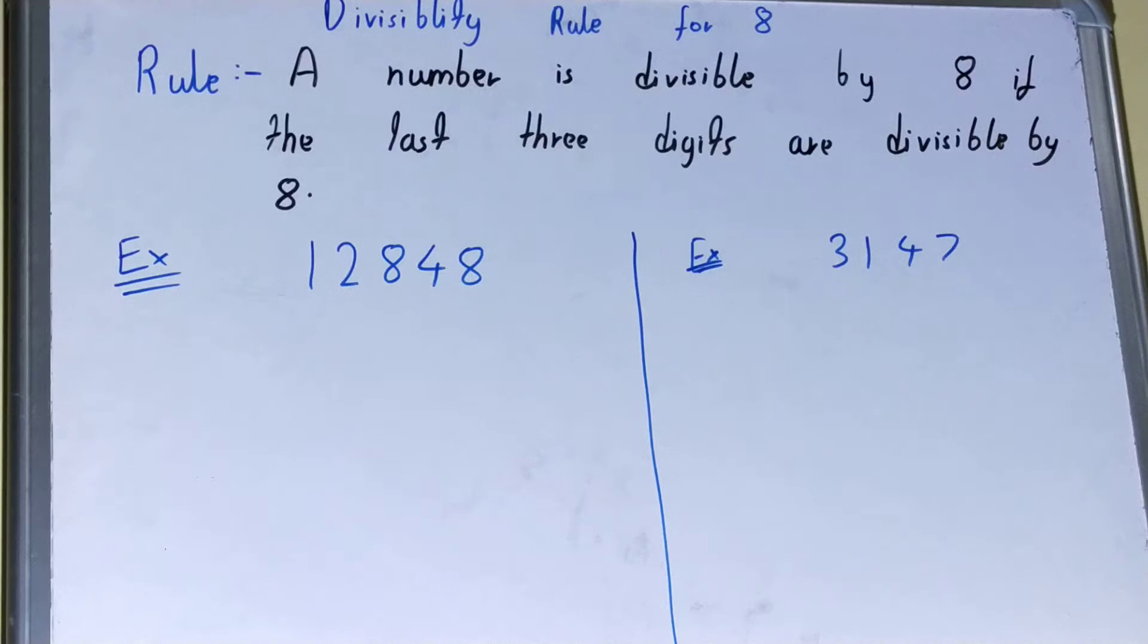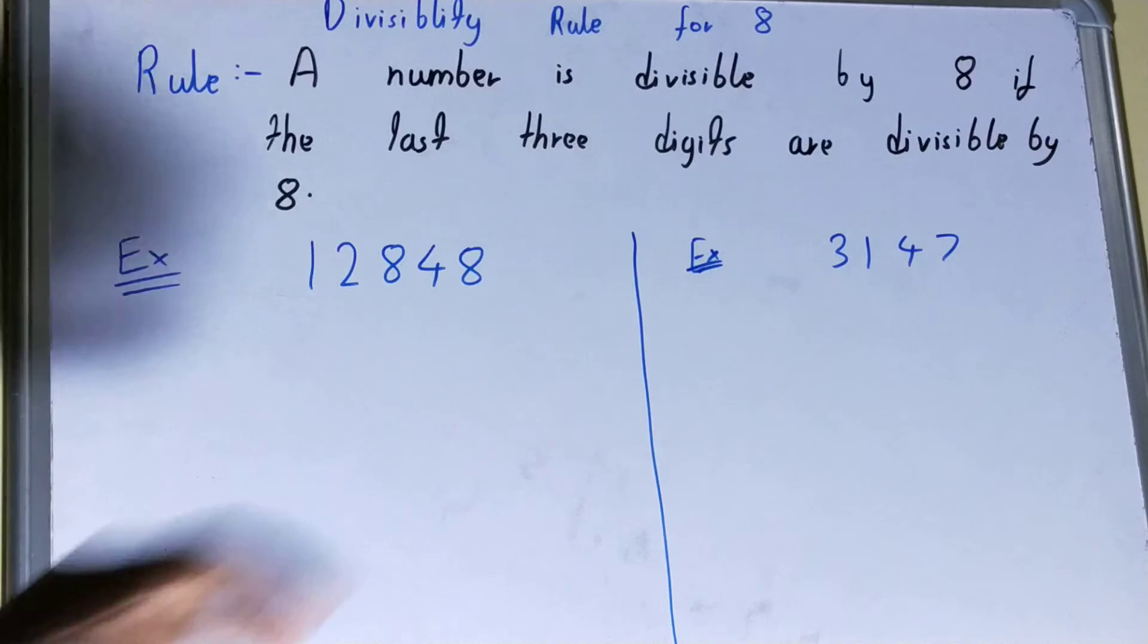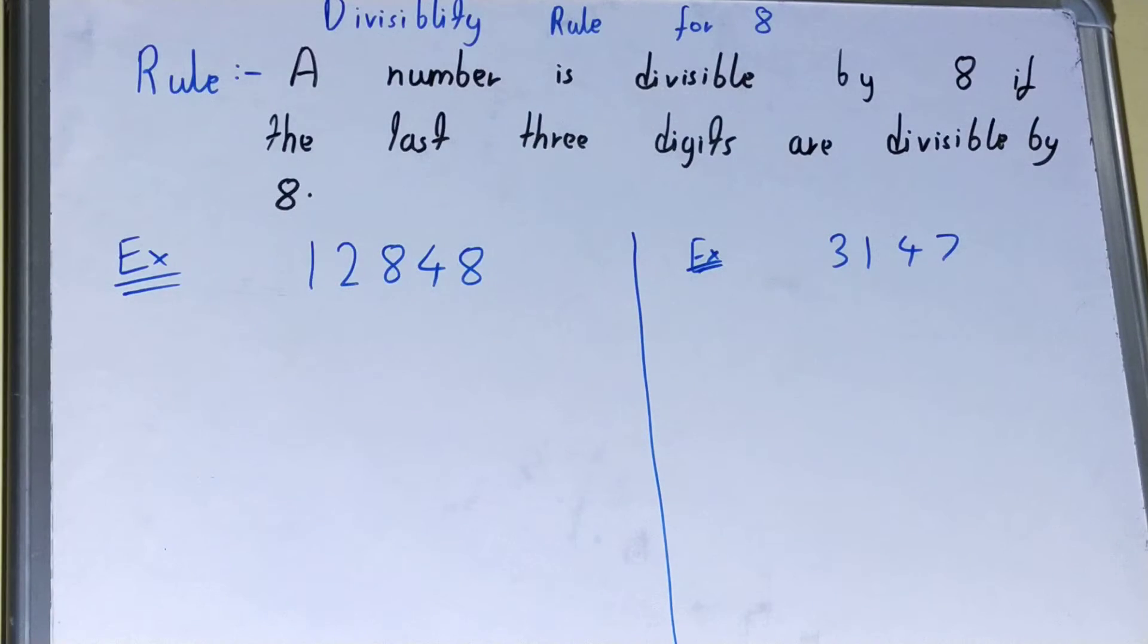First, we'll look at the rule, and then we'll come to some examples to understand how it works. If we talk about the rule, a number is divisible by 8 if the last three digits are divisible by 8. So to check a particular number, we need to take the last three digits, divide it by 8, and see whether it is divisible or not.